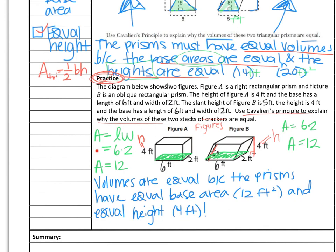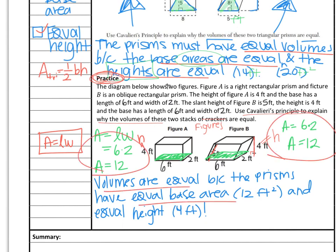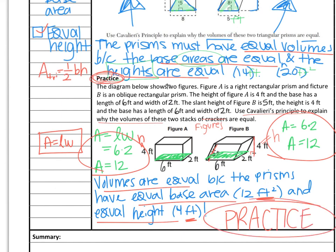Notice that you'll see work defining the area on both rectangular prisms for the base. Remember that if you have a rectangular base, the area equals length times width. Calculate the area on both sides, state that the volumes are equal because they have equal base area and equal height, and make sure your units are proper. Go ahead and practice — make sure you do all problems. Then work on your CFU once you show your teacher your summary and practice problems. Adios!